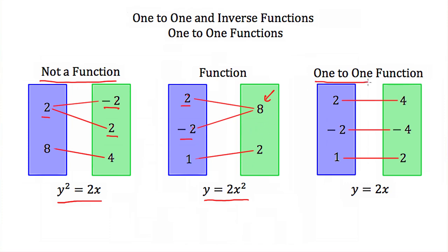Lastly, here we have a one-to-one function: y = 2x. If I plug in 2 for x, I get 4 for y. If I plug in -2 for x, I get -4 for y. If I plug in 1 for x, I get 2 for y. This is a one-to-one function because every value of x will get us a different single value of y.